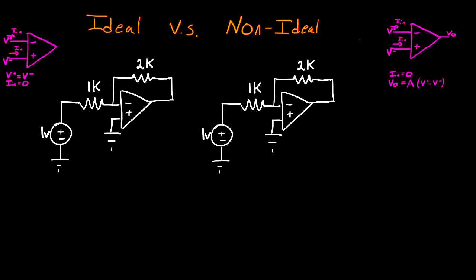Now in the case of a non-ideal op amp, it's very similar with current - no currents going into the negative or positive. However, instead of saying that the positive and negative inputs are the same, we instead say the output voltage is equal to the gain of the op amp, A, typically a very large number, multiplied by the difference between these two nodes.